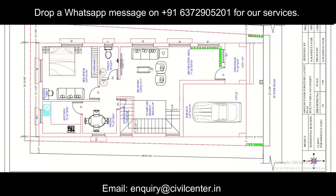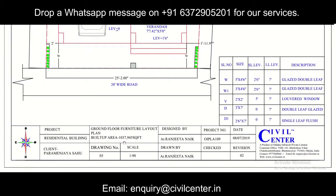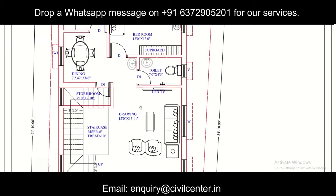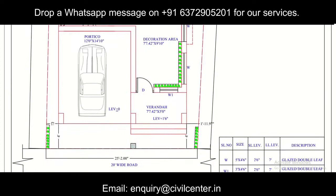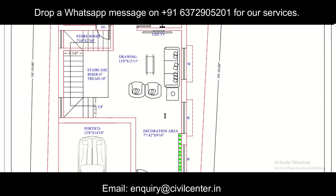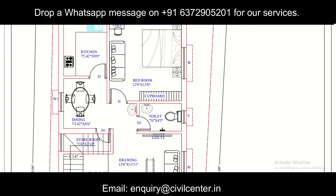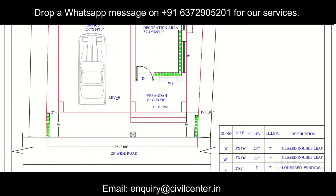First, we'll have a look at our ground floor plan. This ground floor plan has a built-up area of 1037 square feet. The plot is slightly curved from one portion, so the setback provided is around two feet in the rear side, two feet in the left side, and four feet in the front side. We have a portico, then a veranda which can also be used as a sit-out, a decoration area, drawing room, quarter-turn staircase, toilet, bedroom, dining room, and kitchen.